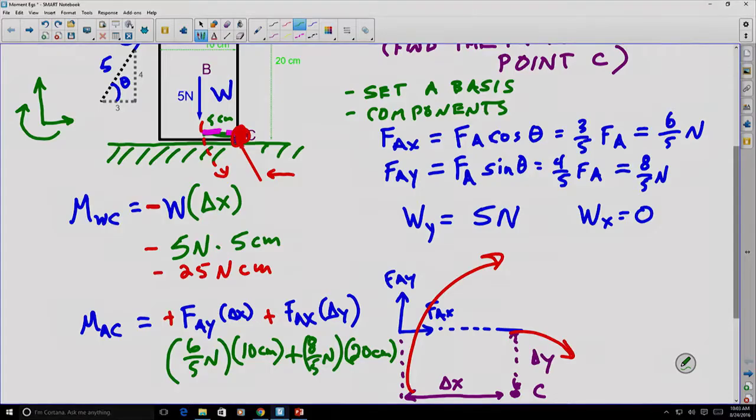So, did you catch the error here? It's an easy mistake because you're reversing the components. But in this particular case, we've made a mistake of writing down the value for F_AY in the place of F_AX and the value for F_AX in the place of F_AY. So in this case, the six-fifths Newton should be eight-fifths and the eight-fifths Newton should be six-fifths. And then when you finish solving the problem, your final answer is actually 40 Newton centimeters and not 44 Newton centimeters.